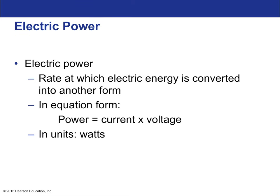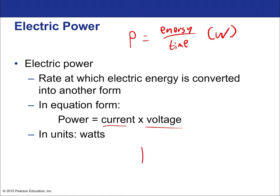What about electric power? It is the rate at which electrical energy is converted to another form — heat, mechanical power, etc. Power, as we know, is energy per time, represented in watts, also joules per second. But there's also a circuit-specific way of expressing power: it's current times voltage. So power P = IV. This ties in really nicely with Ohm's law.